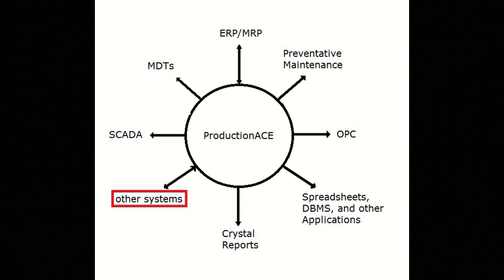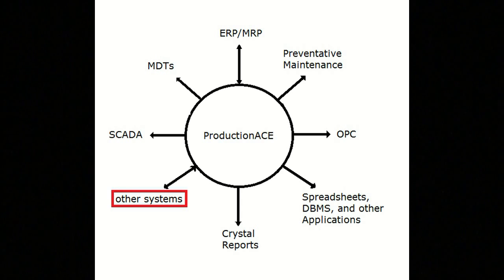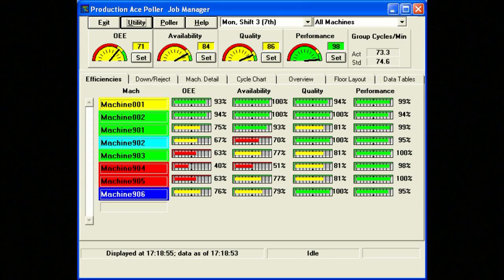Two, the external system interface allows data collected via other systems to be fed into Production ACE. Data collected in this way is presented throughout the system the same way as MDT collected data would be.